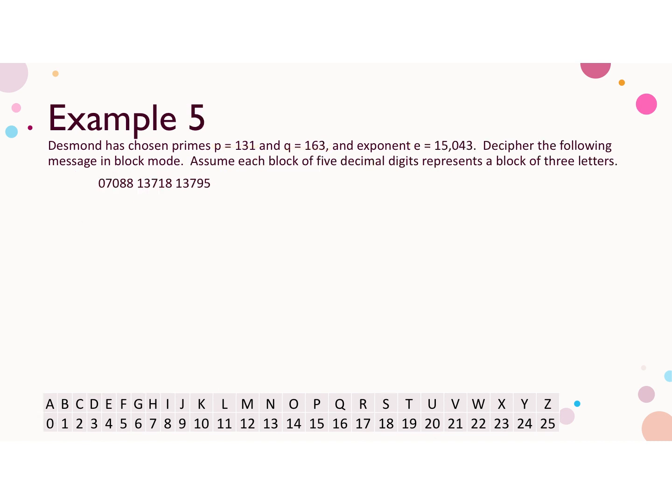Example 5. Desmond has chosen the primes p equals 131 and q equals 163 and the exponent e 15,043 to encrypt messages. We want to decrypt the following message in block mode. Assume each block of five decimal digits represents a block of three letters. So this is the reverse of the previous example.